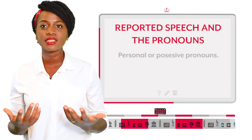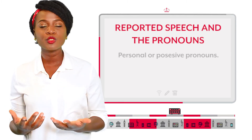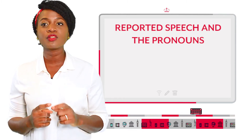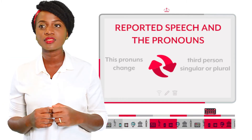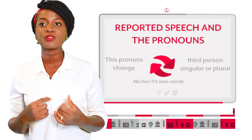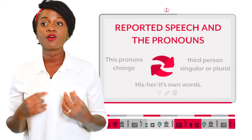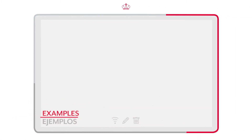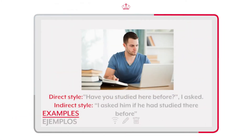Personal or possessive pronouns: as usual in reported speech, these pronouns change to the third person singular or plural, except if the speaker refers to his, her, or its own words. Example: 'Have you studied here before?' I asked. I asked him if he had studied there before.